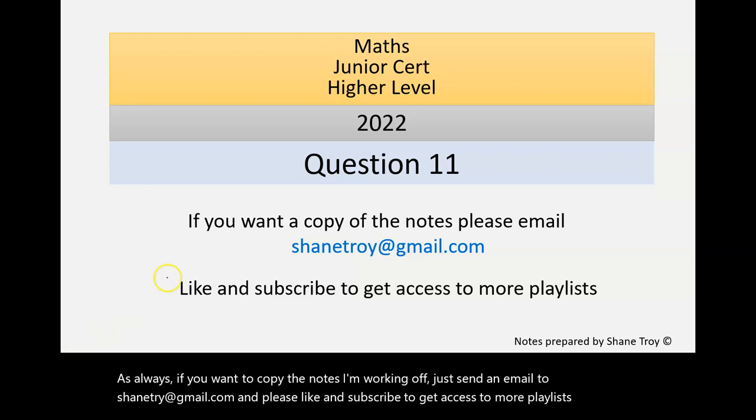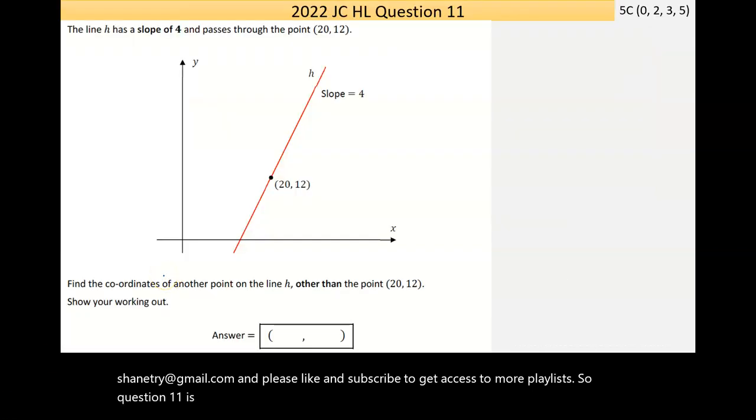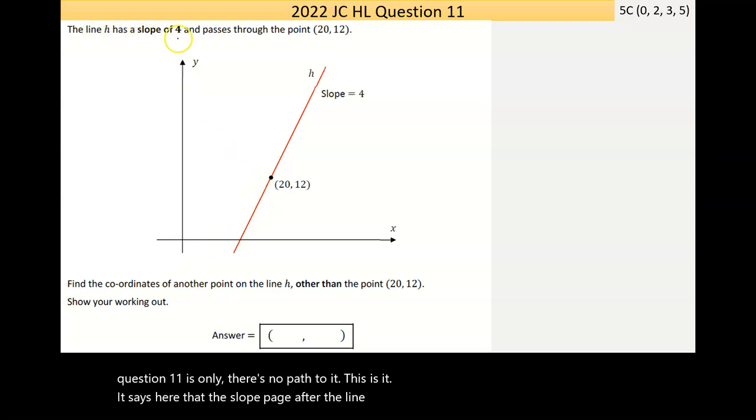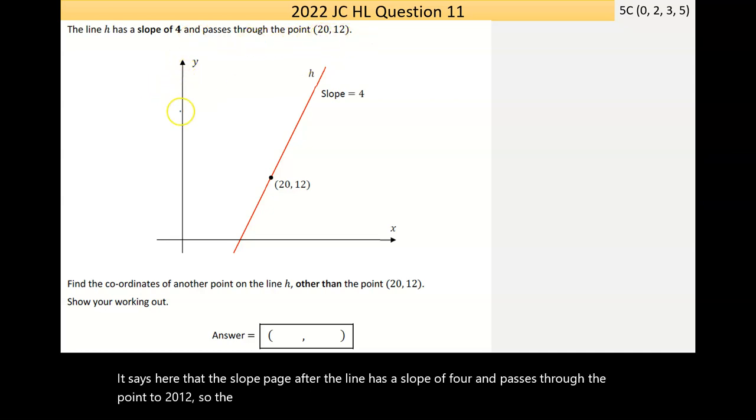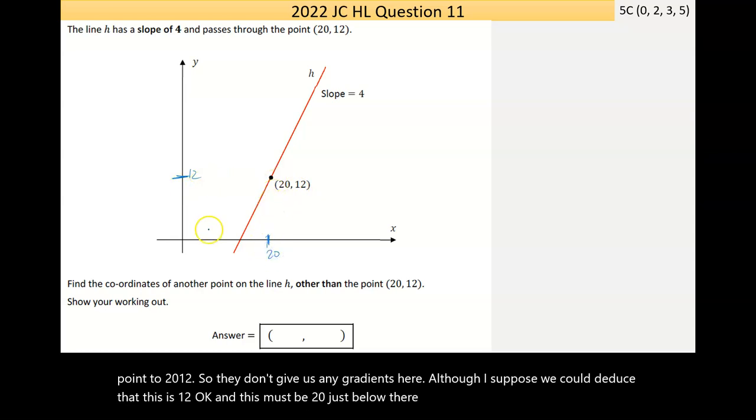So question 11 is only, there's no path to it, this is it. It says here that the line h has a slope of 4 and passes through the point (20, 12). So they don't give us any gradients here, although I suppose we could deduce that this is 12, and this must be 20, just below there. We don't know much more than that.